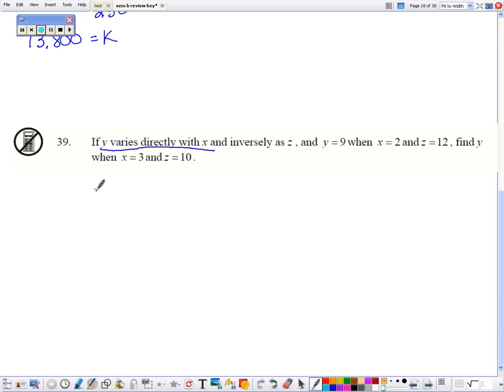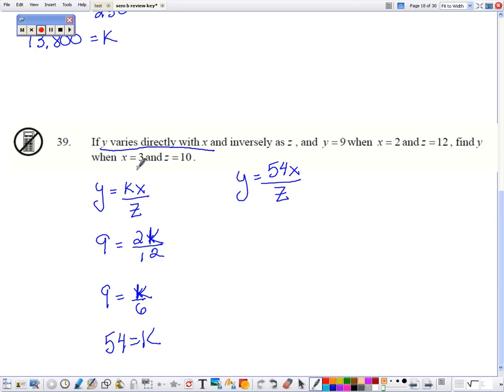Y varies directly with x and inversely with z. And plugging in what we know, then we have to solve for x. So first I'm going to reduce these, and then multiply, oops, should be a k. Then we're going to multiply by 6. So then rewriting our equation. Now we're going to substitute in x and z. And if we multiply our numerator, that's 162 divided by 10. So 16.2 is y.